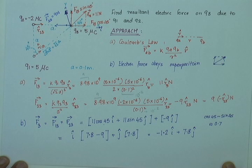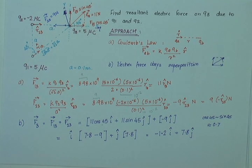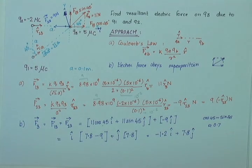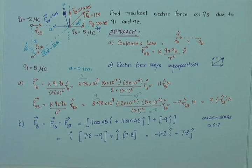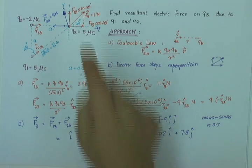To recap, we had a problem in which we had three point charges and we had to find out the resultant force on one of the point charges due to the other two point charges. First, we used Coulomb's law to find out the force that individual charges exerted on Q3. And then we used the principle of superposition, that is basically vector sum, to find the resultant electric force on Q3 due to the two forces.